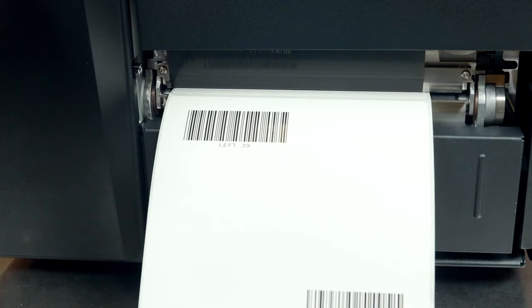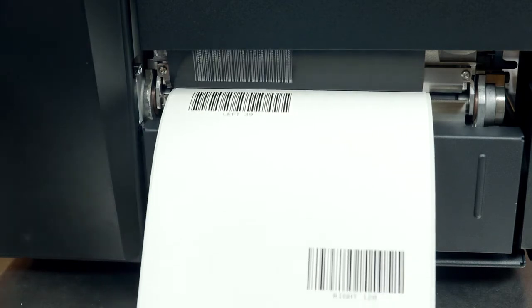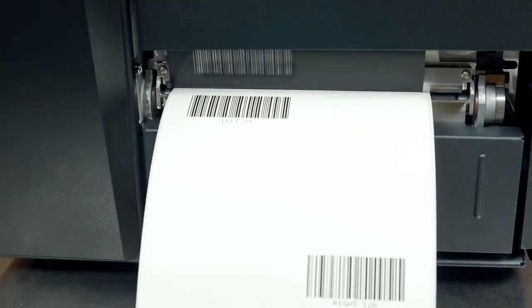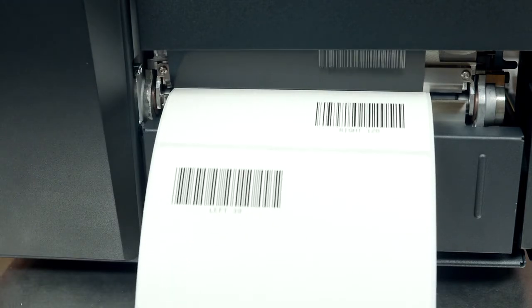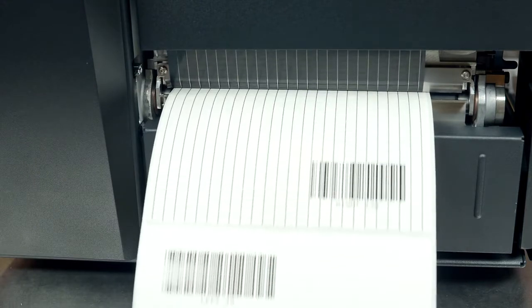You can also test the case where the validator detects a missing or damaged barcode by covering the beam during printing and observing the error action taken based on the validator's error action setting.